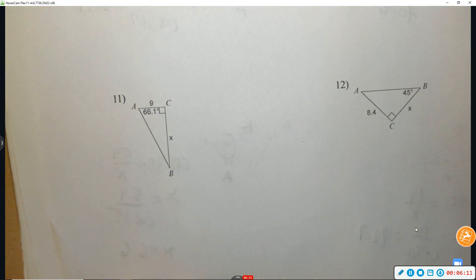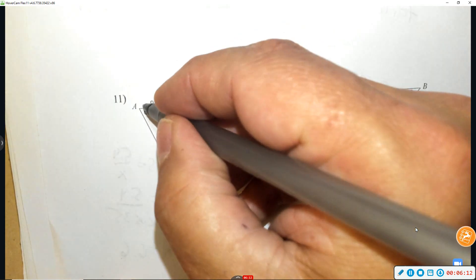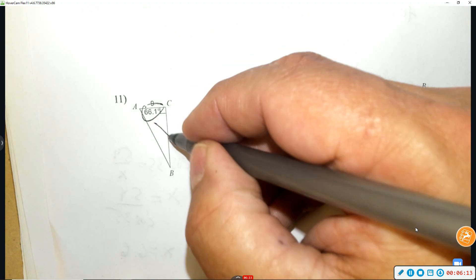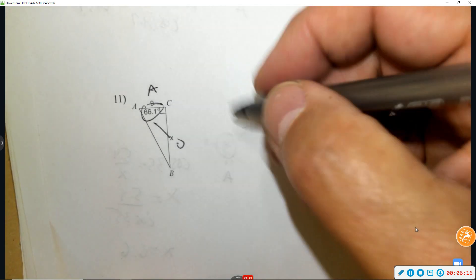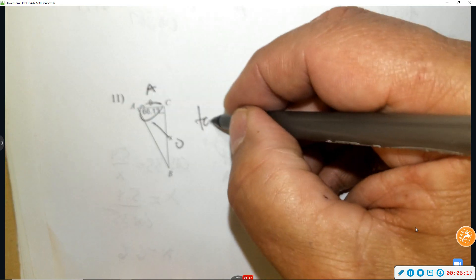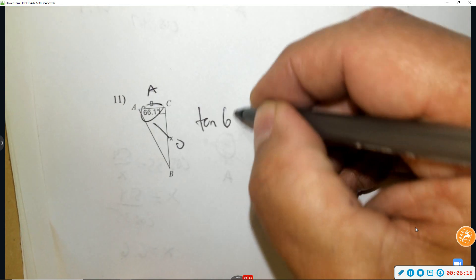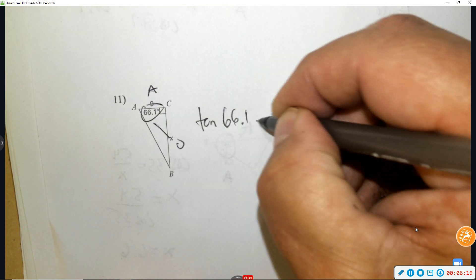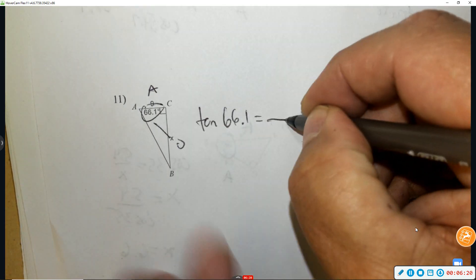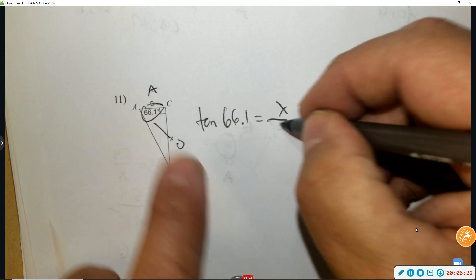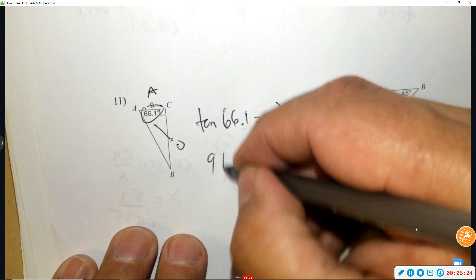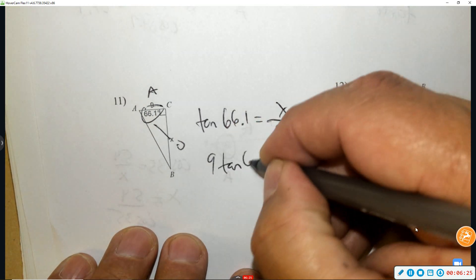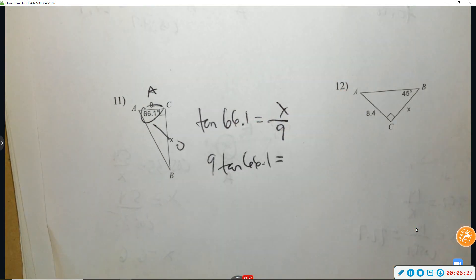Number eleven — two lines, two lines. See if you can do it; circle the angle. Opposite and adjacent, that's tangent. So tangent of 66.1 equals opposite over adjacent. Multiply by 9 and use your calculator.